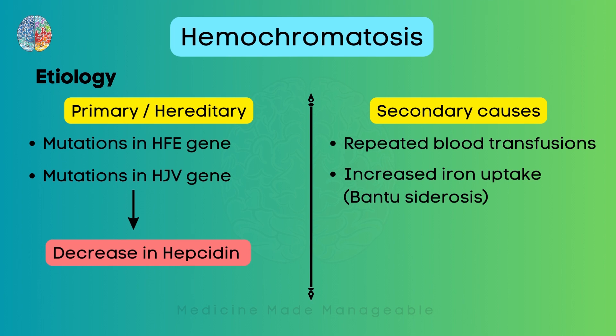This Bantu Siderosis is a very interesting story. It was actually discovered in an African tribe called Bantu. What they used to do is make homemade beer in iron pots. Due to scraping of the pots and mixing, the iron would come from the utensils into the beer. In a normal commercial beer there is only 0.5 milligrams of iron per litre, but in this beer the iron levels were up to 82 milligrams per litre — more than 100 times — which caused a lot of disease among those people, so much so that they gave a separate name to this: Bantu Siderosis.